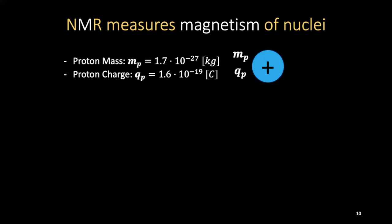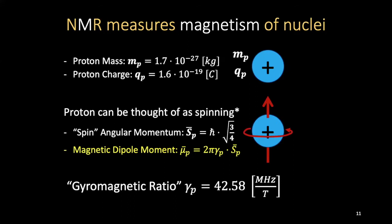NMR measures the magnetism of the nuclei. Specifically regarding the proton, it has a very small mass as we're aware from high school chemistry and physics, and it is associated with a charge equal but opposite to that of an electron. The proton has this quantum mechanical property where it can be thought of as spinning — it has a spin angular momentum given by h-bar times the square root of three-quarters. But there is no actual intrinsic spin; there's nothing spinning as far as we're aware — it's just an intrinsic property of the proton.